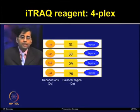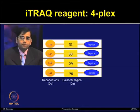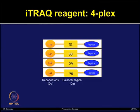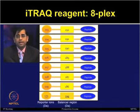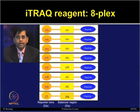The iTRAQ label is an isobaric tagging compound consisting of a reporter ion series. For the 4-plex iTRAQ reagent, the reporter ions range from 114 to 117 Dalton, and the balancer region is from 191 to 188 Dalton, so the total mass of the isobaric tag is 305. For the 8-plex reagent, the reporter ions range from 113 to 120 Dalton, and the balancer region is from 185 to 192 Dalton, so the total mass of the isobaric tag also remains 305.